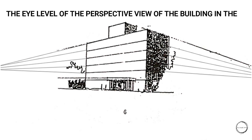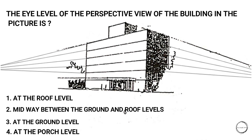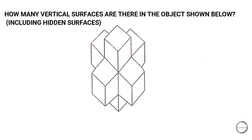Next: the eye level of the perspective view of the building in the picture is at — options are: roof level, midway between the ground and roof level, at the ground level, or at the porch level. The answer is 'at the ground level.'